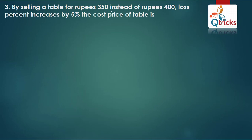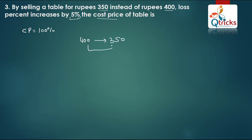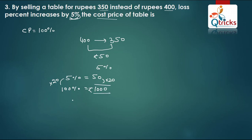The next question: By selling a table for Rs. 350 instead of Rs. 400, the loss percent increases by 5%. Find the cost price of the table. CP is always 100%. The article was meant to sell at Rs. 400 but sold at Rs. 350 — a difference of Rs. 50. This Rs. 50 difference equals 5% of cost price. So 5% = Rs. 50, meaning 100% = Rs. 1000. The cost price is Rs. 1000.